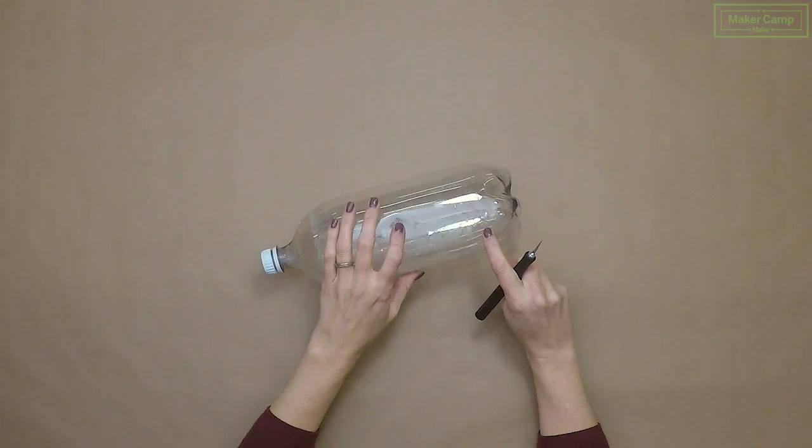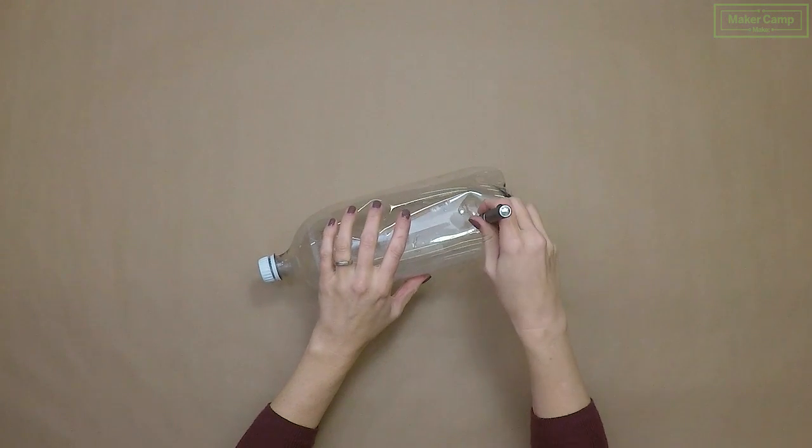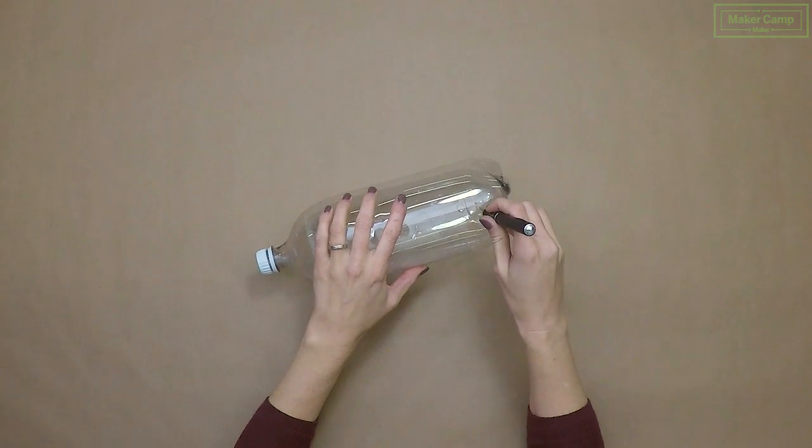You'll see a natural seam at the bottom of your 2-liter bottle. Use your craft knife and follow along the seam and cut off the bottom of your bottle.